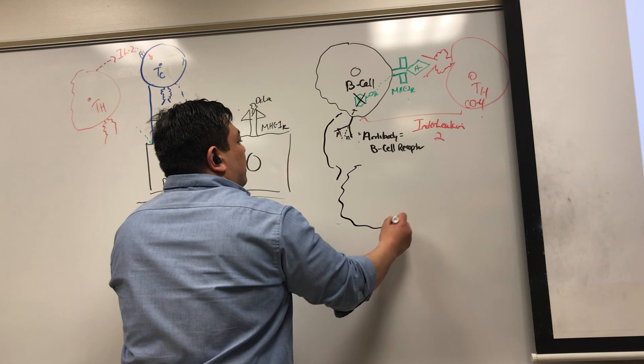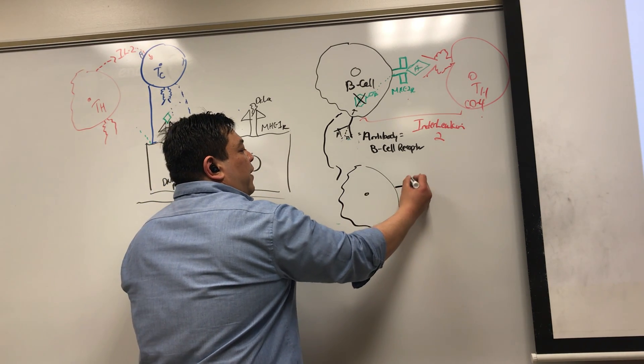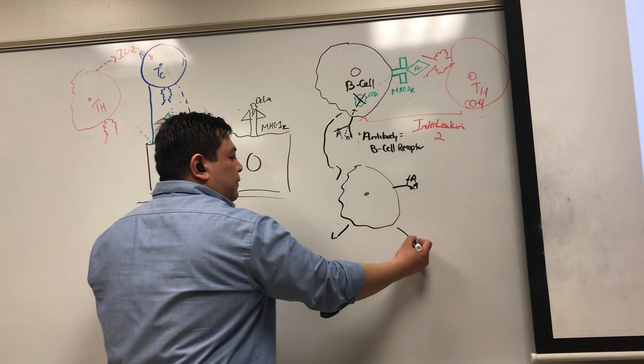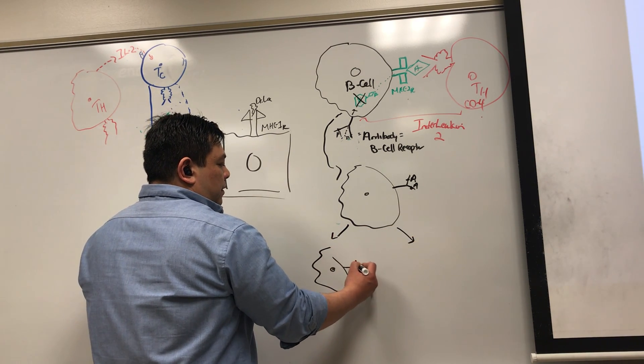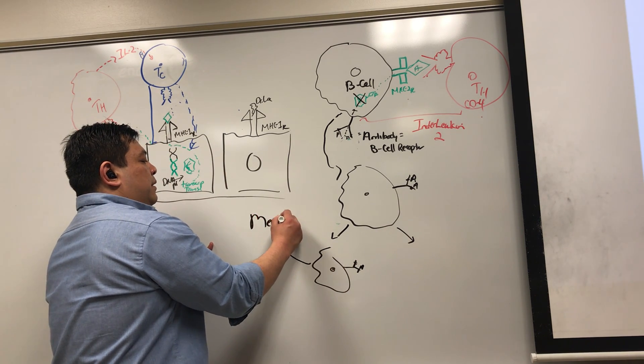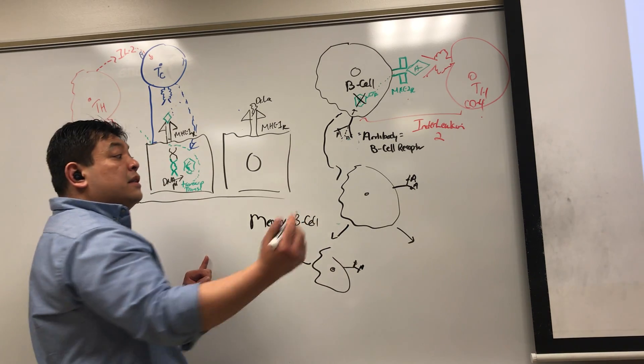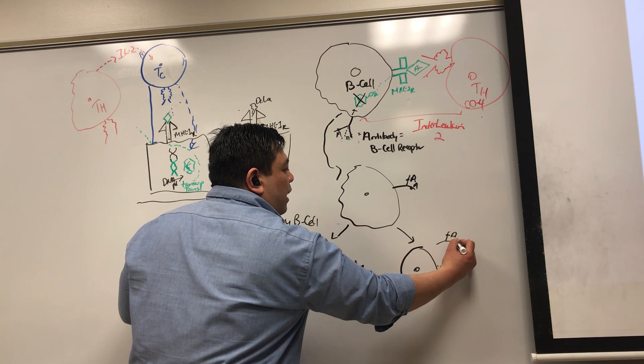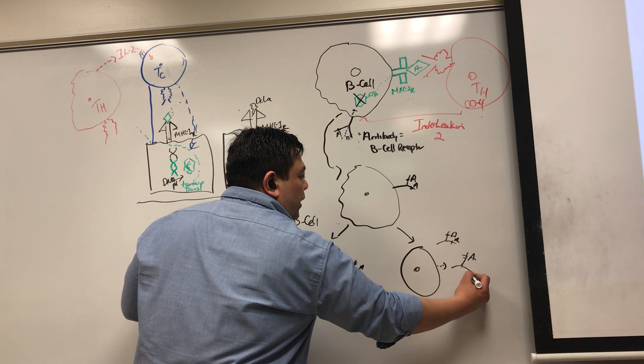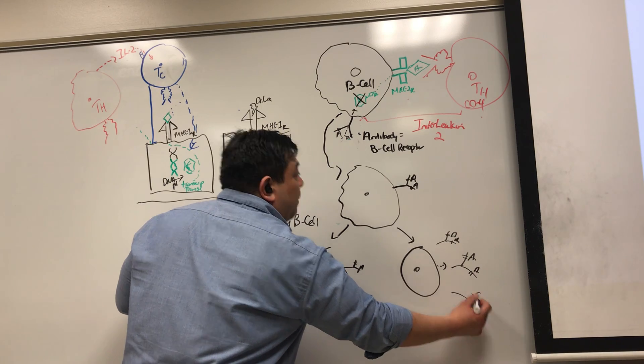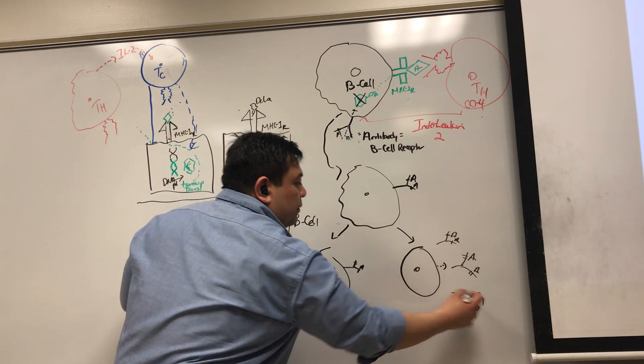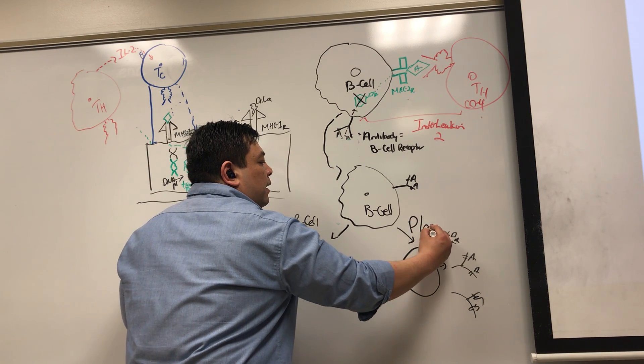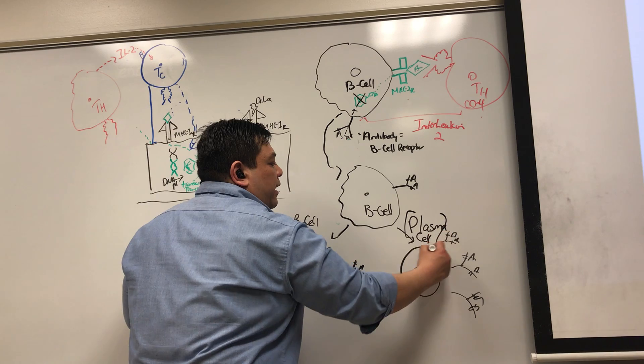This B-cell is going to start producing. First of all, it's going to have still this receptor that recognizes A. What it's going to do is once active, it forms clones of itself. Some of the clones turns into memory B-cells for later infections. Some of the clones starts producing antibodies. And those antibodies are all specific for epitope A, the same epitope that allowed you to bring that virus in in the first place. Now, these cells turn from being called a B-cell to being called a plasma cell.